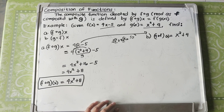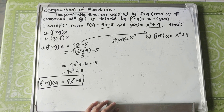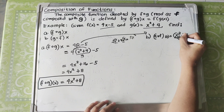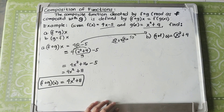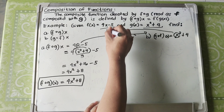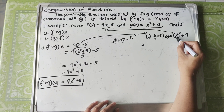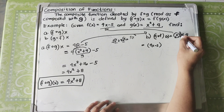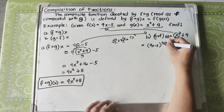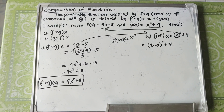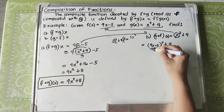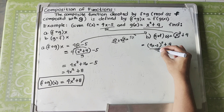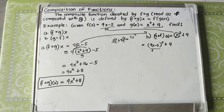Now we insert F into G. To do this, we simply substitute X in G's formula with the formula of F. F's formula is 4X minus 5. So X in G's formula is replaced by (4X minus 5), giving us (4X minus 5) squared plus 4.